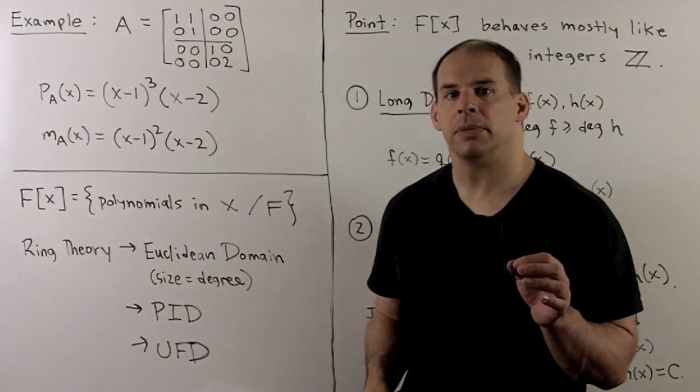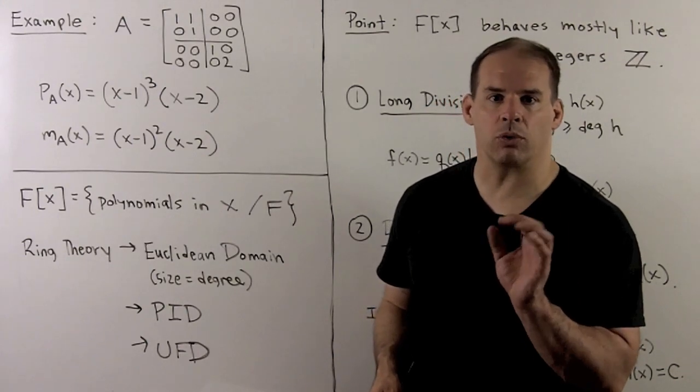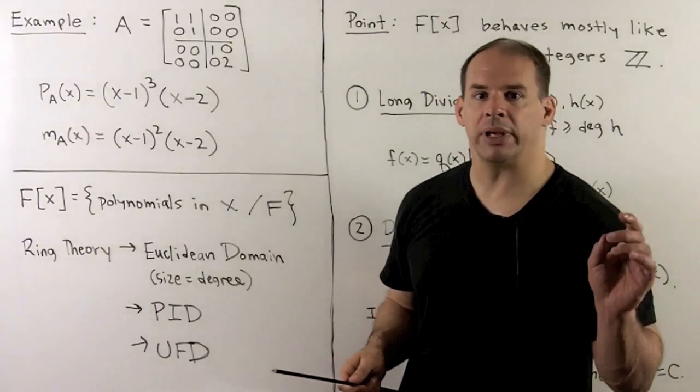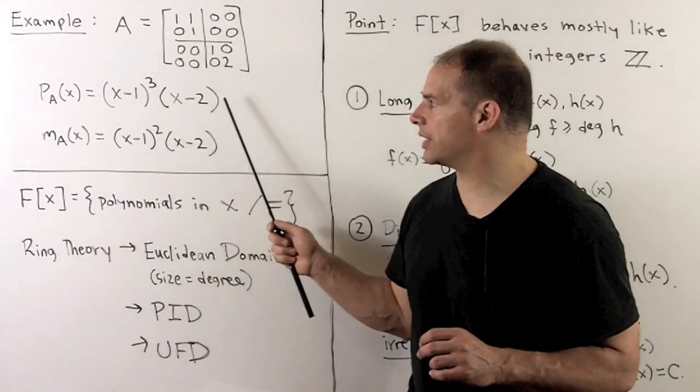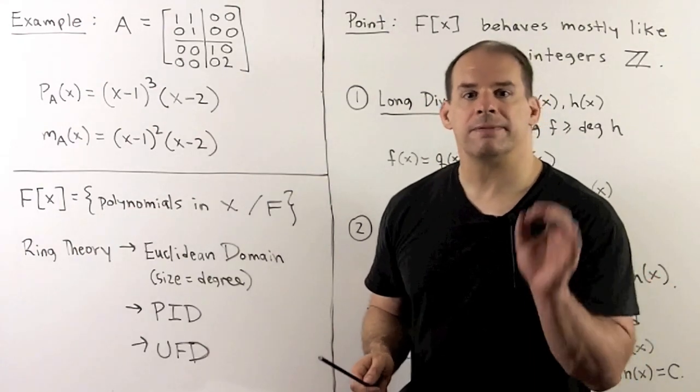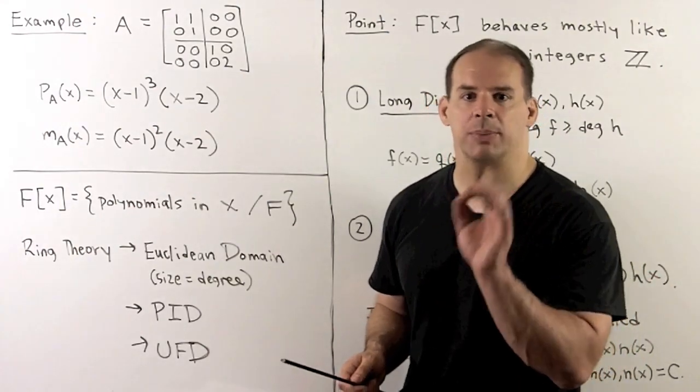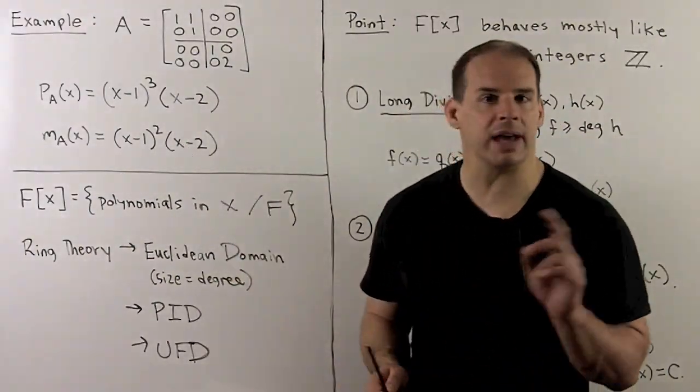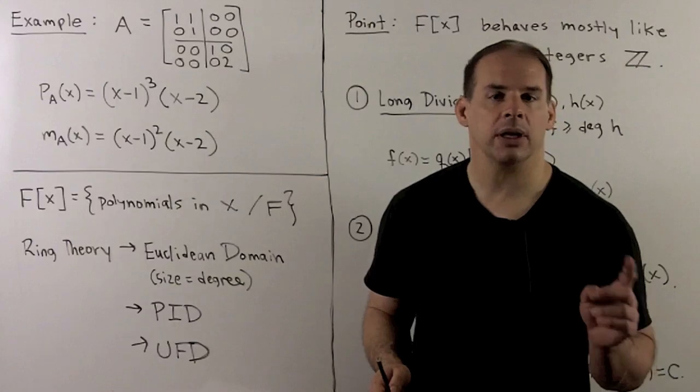For an example, let's consider the following four by four real matrix. If we work out the characteristic polynomial, we get (X minus 1) cubed times (X minus 2). By our theorem, factors of the minimal polynomial are going to be (X minus 1) and (X minus 2). We just have to figure out the exponent on the (X minus 1).